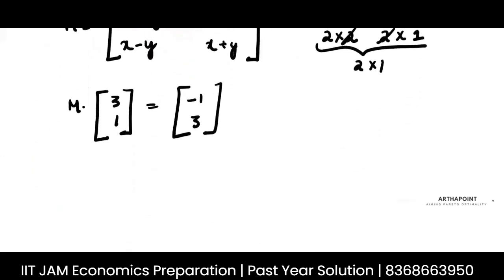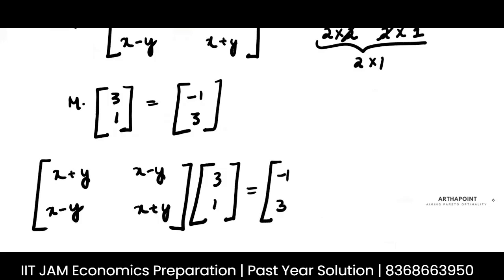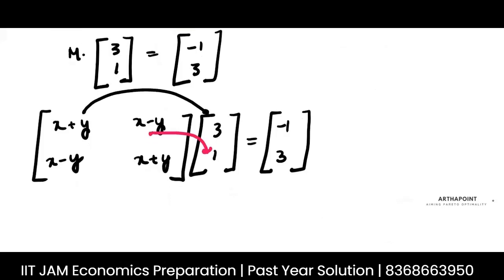Let's see: X plus Y, X minus Y, X minus Y, X plus Y. This is given to you as multiplied with 3, 1 is given to you as minus 1, minus 1, 3. So simple, how do you multiply? This gets multiplied by this plus this gets multiplied with this.